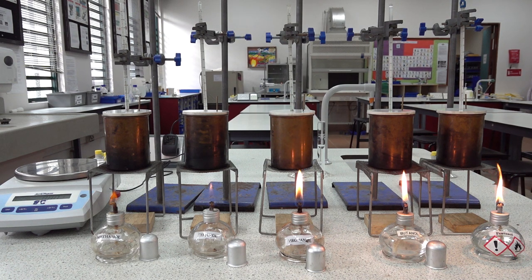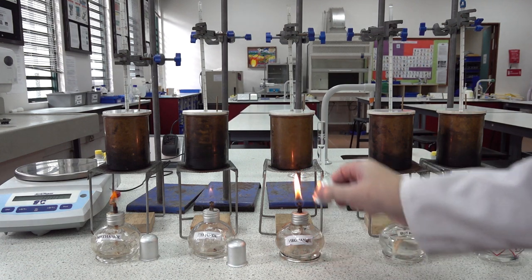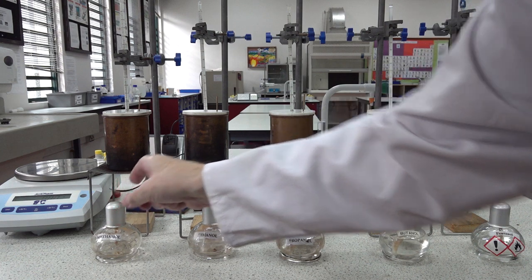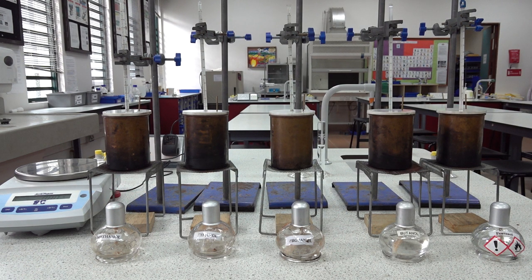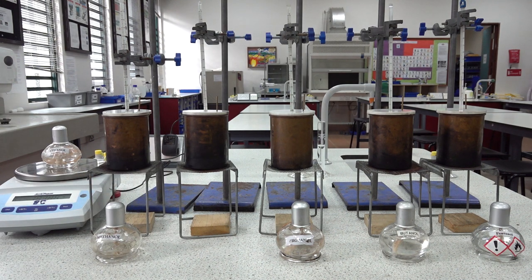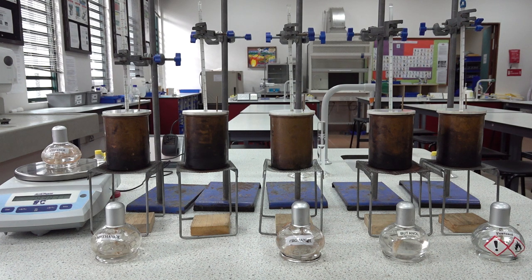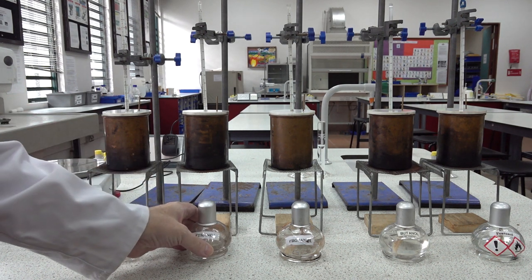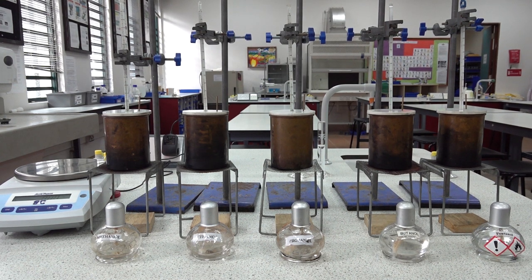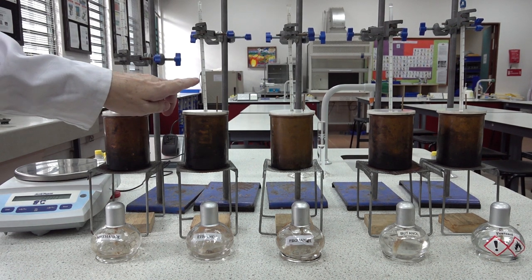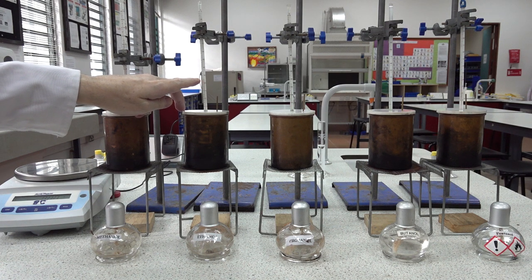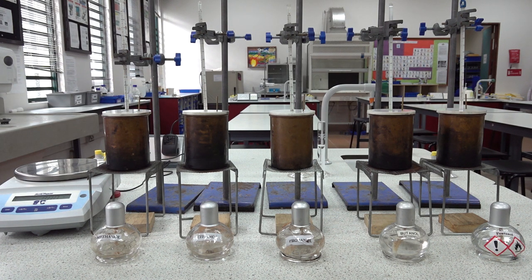First we need to extinguish the flames. Let's start with the ethanol. The mass of the ethanol burner at the start is 193.83 grams. We now need to take the temperature at the start for the water, and that is reading 26 degrees centigrade.